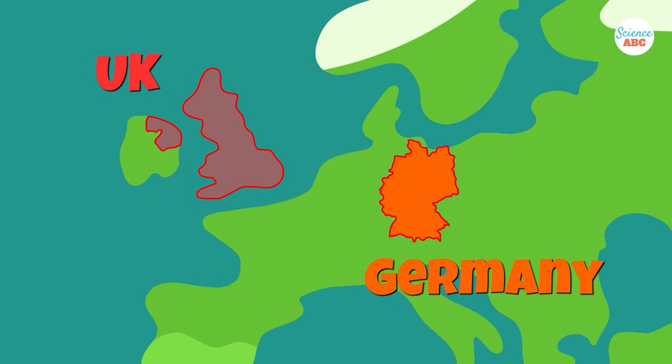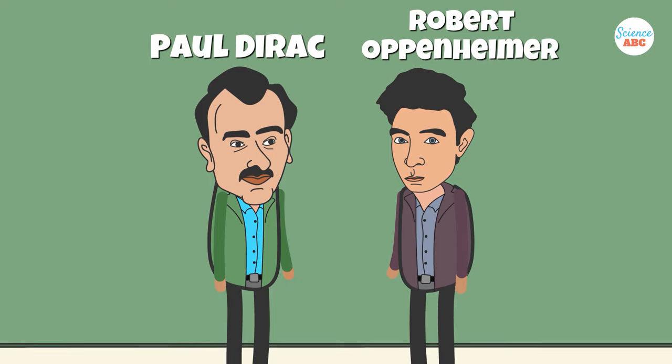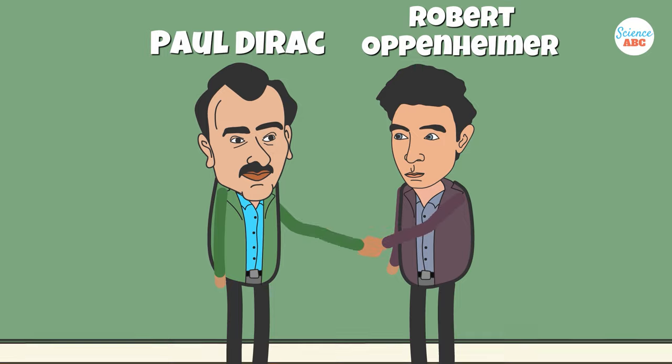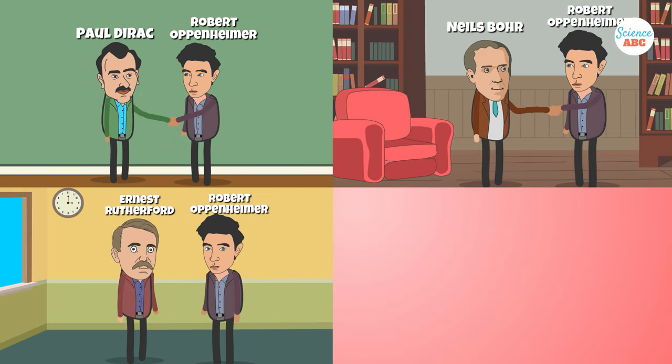He received his PhD in theoretical physics at Cavendish Laboratory in Cambridge and the University of Göttingen in Germany. These two institutions exposed Oppenheimer to legendary physicists like Paul Dirac, Niels Bohr, Ernest Rutherford, and more.